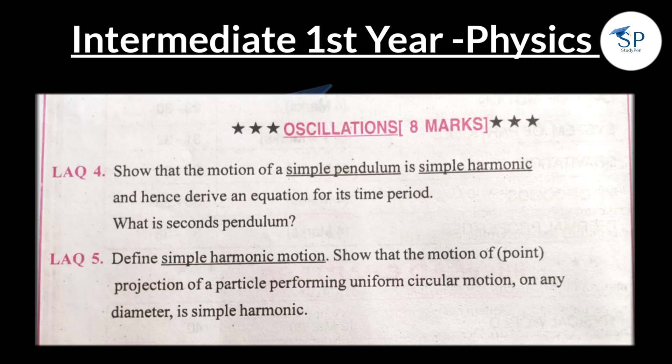Next, Oscillations. There are two important 8-mark questions: Simple Pendulum and Simple Harmonic Motion. Derive the equation for its time period and define what a seconds pendulum is. Second question: define simple harmonic motion and show that the motion of the projection of a particle performing uniform circular motion on any diameter is simple harmonic.